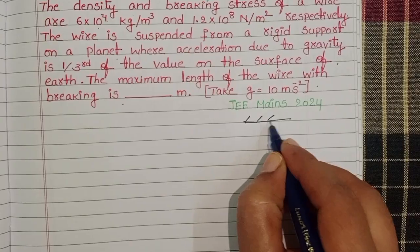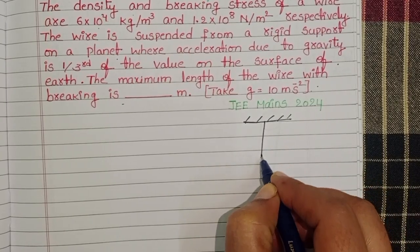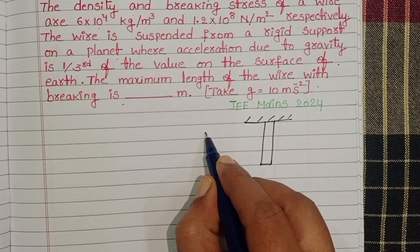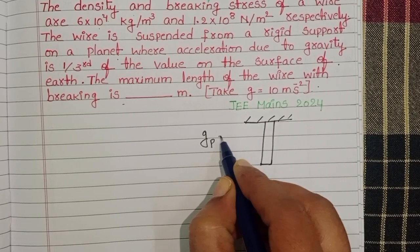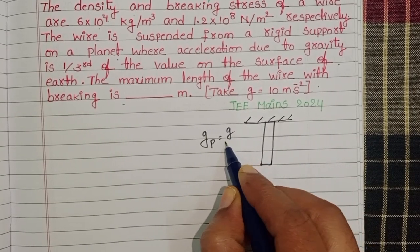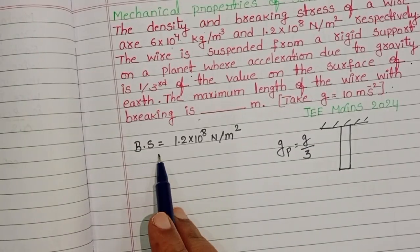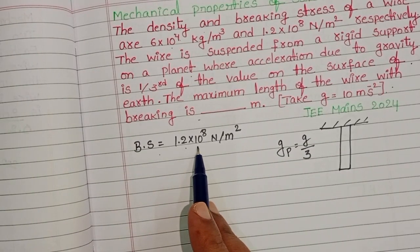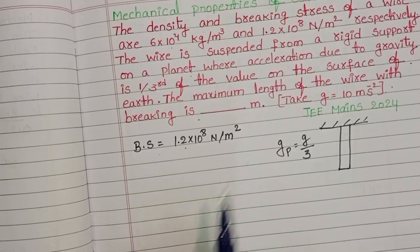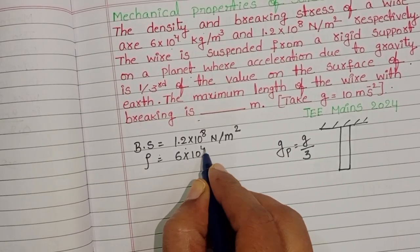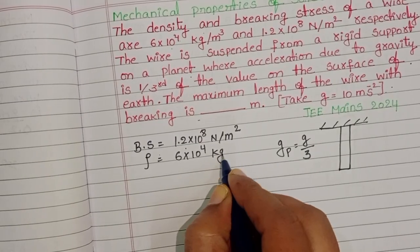A wire is suspended from a support on the surface of the planet. Acceleration due to gravity is one third of the acceleration due to gravity on the surface of the earth. Given breaking stress is 1.2 into 10 power 8 newton per meter square, and density equals 6 into 10 power 4 kg per meter cube.